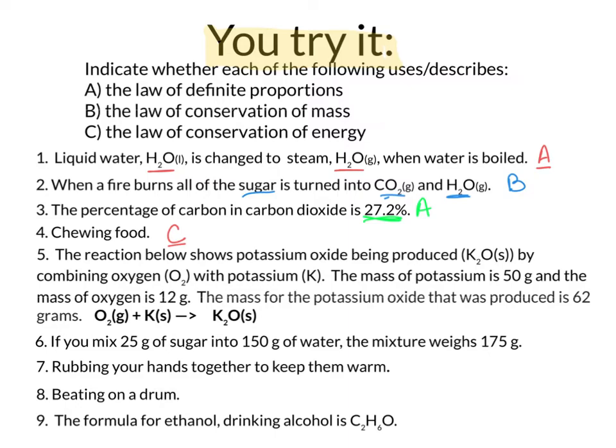How about number five? We see here, the reaction below shows potassium oxide being produced, K2O solid, by combining oxygen, O2 gas, with potassium, K solid. The mass of potassium is 50 grams, and the mass of the oxygen is 12 grams. The mass for the potassium oxide that was produced is 62 grams. And then it gives the formula O2 gas plus potassium solid goes to K2O solid. So here we see the formulas, and we see that those masses are the same. So this will definitely be the law of conservation of mass.